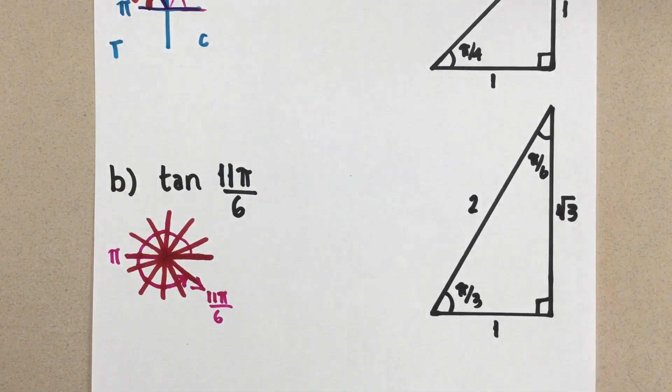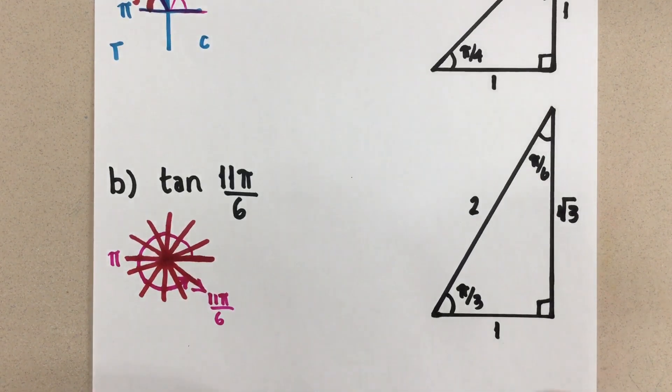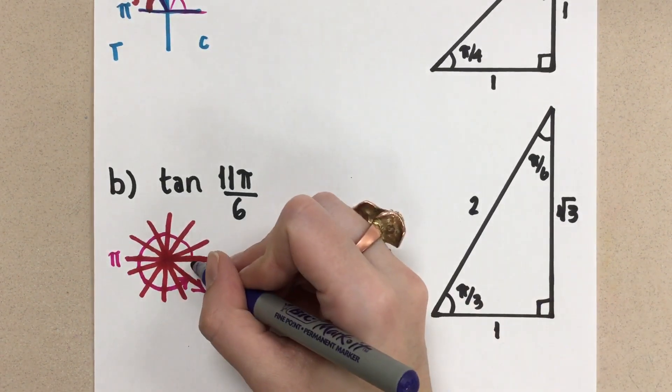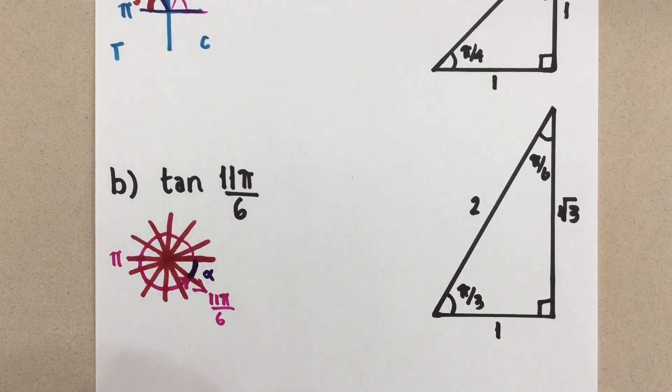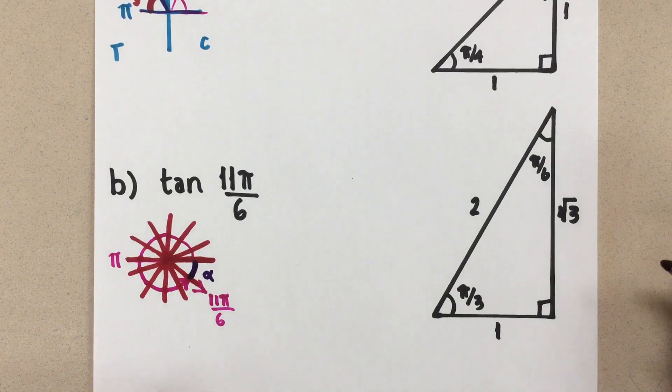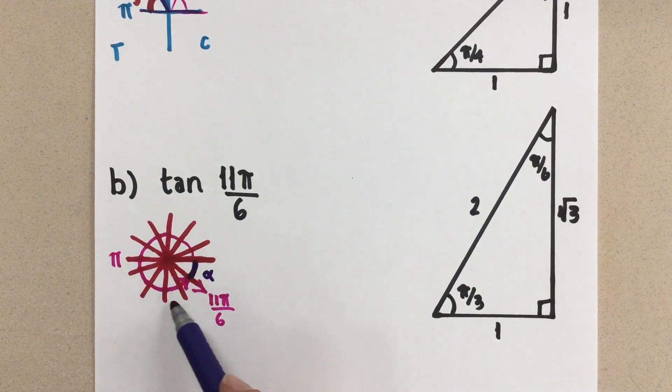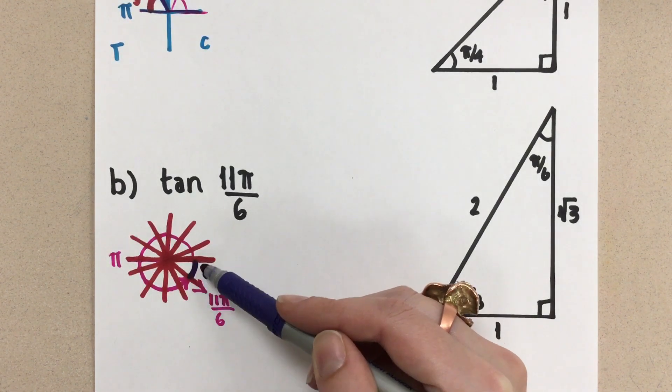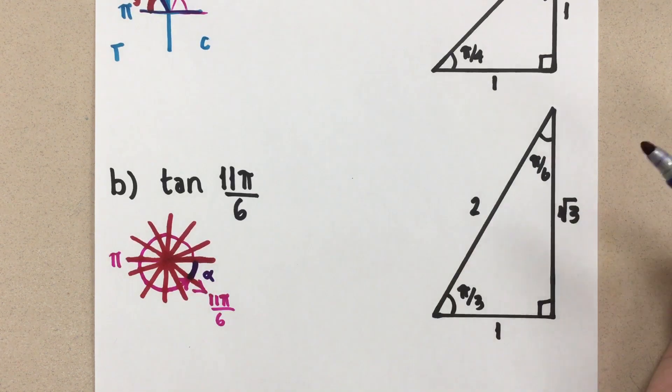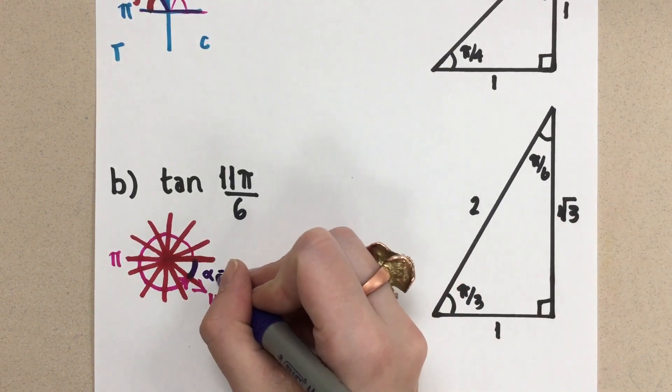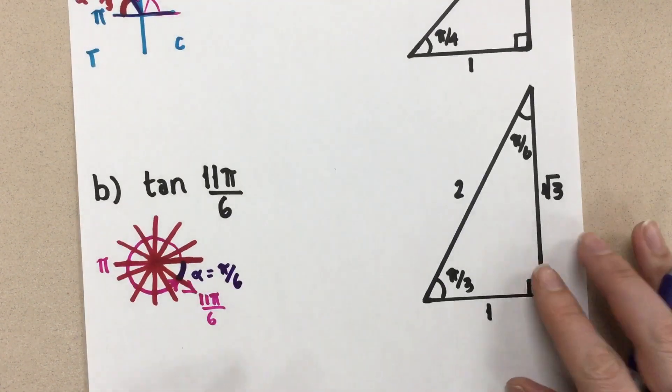Okay, so now, if that's where the terminal arm is for my angle, I know that to do my calculations, I really need to look at the related acute angle. So this is what I want to look at here. And the related acute angle value, if all the way around here is 11 sixths, then right here that's going to be 1 sixth. We have 1 sixth left to complete that circle. So my related acute angle is 1 sixth of π, which is π over 6, here.